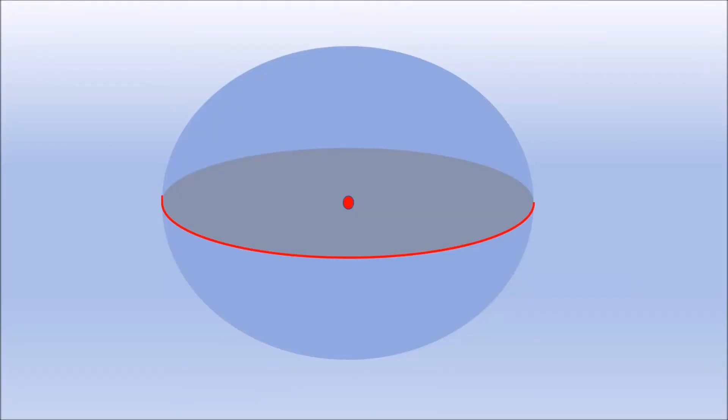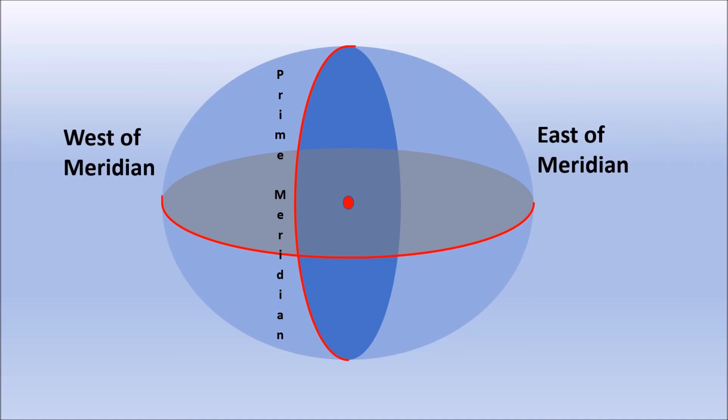Let us now dissect the earth along the line of prime meridian or the zero-longitude line. Now we get eastern and western sector. Now draw two lines from the center of the earth on top of the equatorial plane. One to the prime meridian and one to the line or plane on the equator from where we measured the vertical angle.